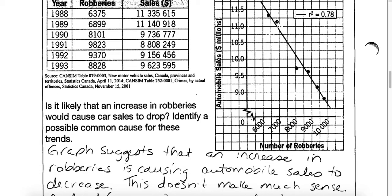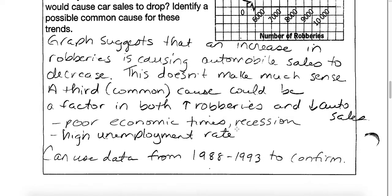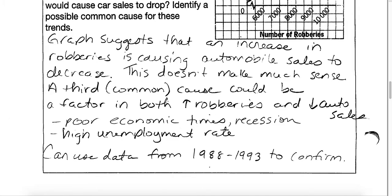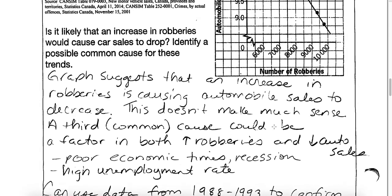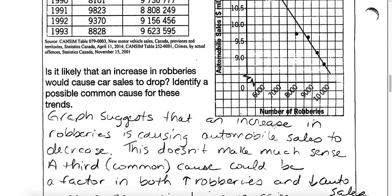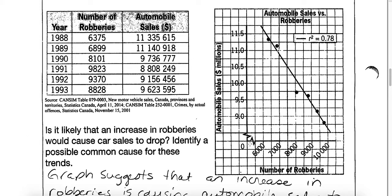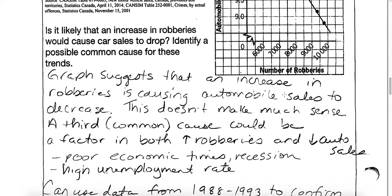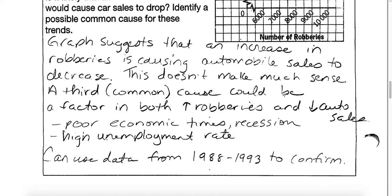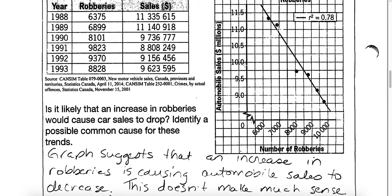Students come to conclusions based on the graph they see. What is probably happening here is that there's a third common cause that would be a factor. If we think about poor economic times — maybe a high unemployment rate from 1988 to 1993 — if our economy was going through a slump, that might cause the number of robberies to go up. It also might be the cause of automobile sales going down. So you have to be careful what you put on a graph; there is a third variable here that is actually causing both of these situations to occur.